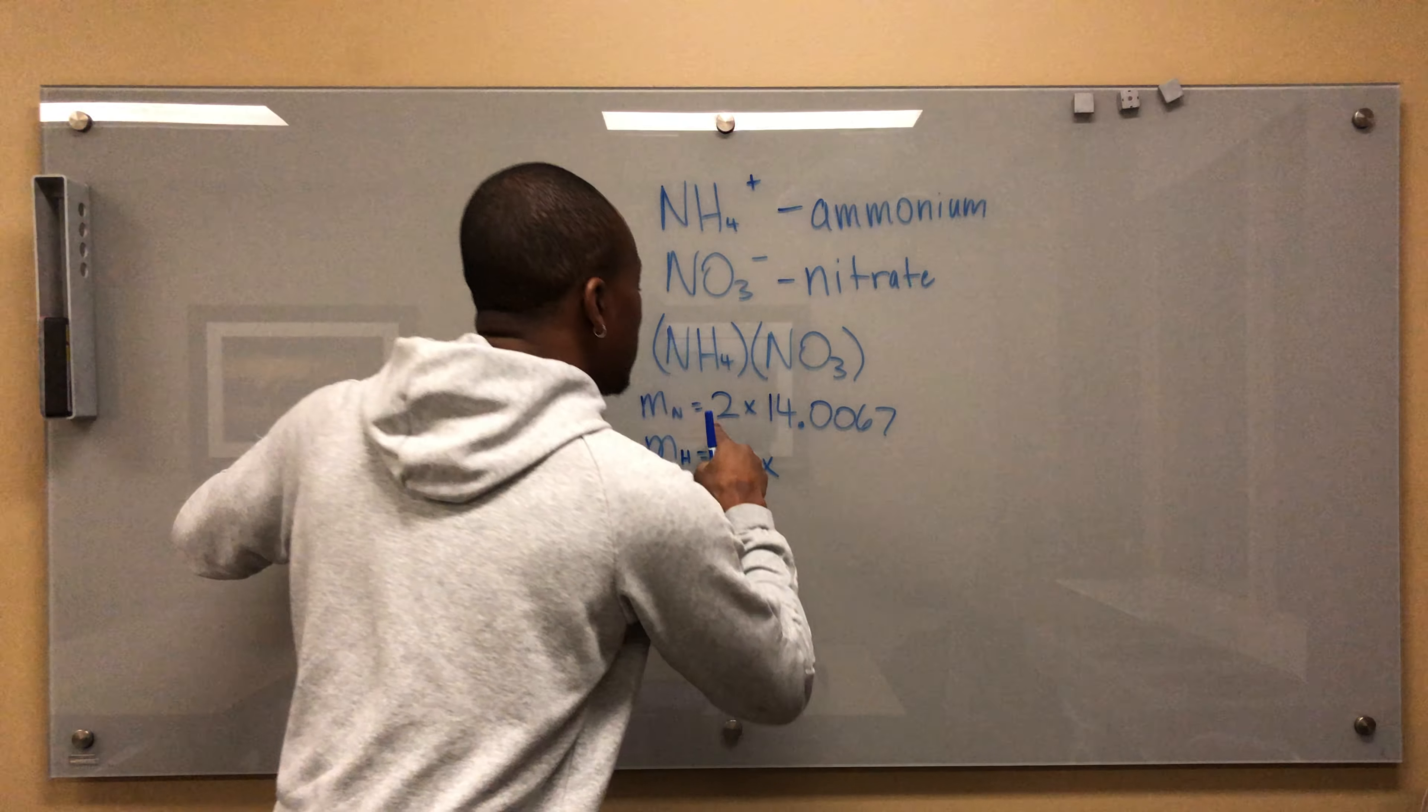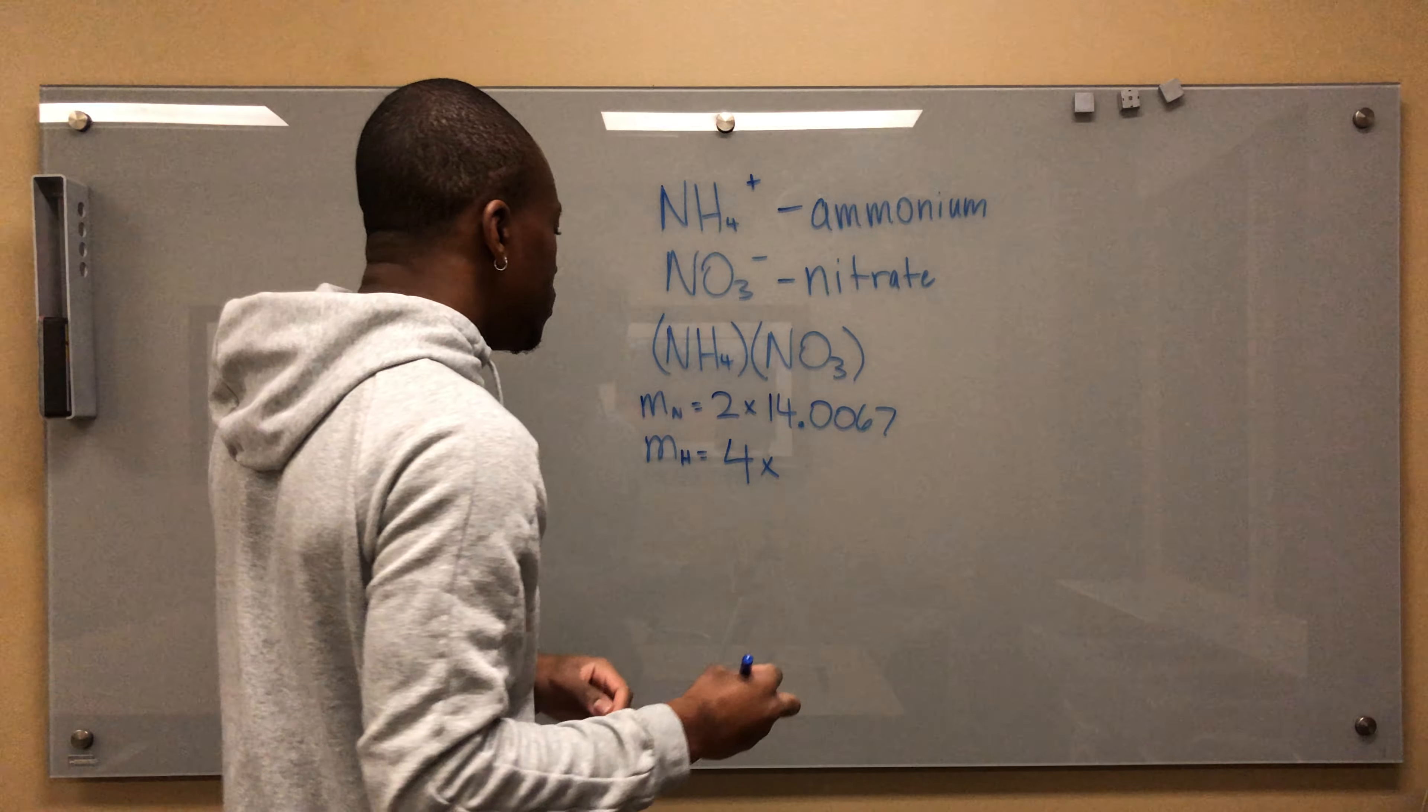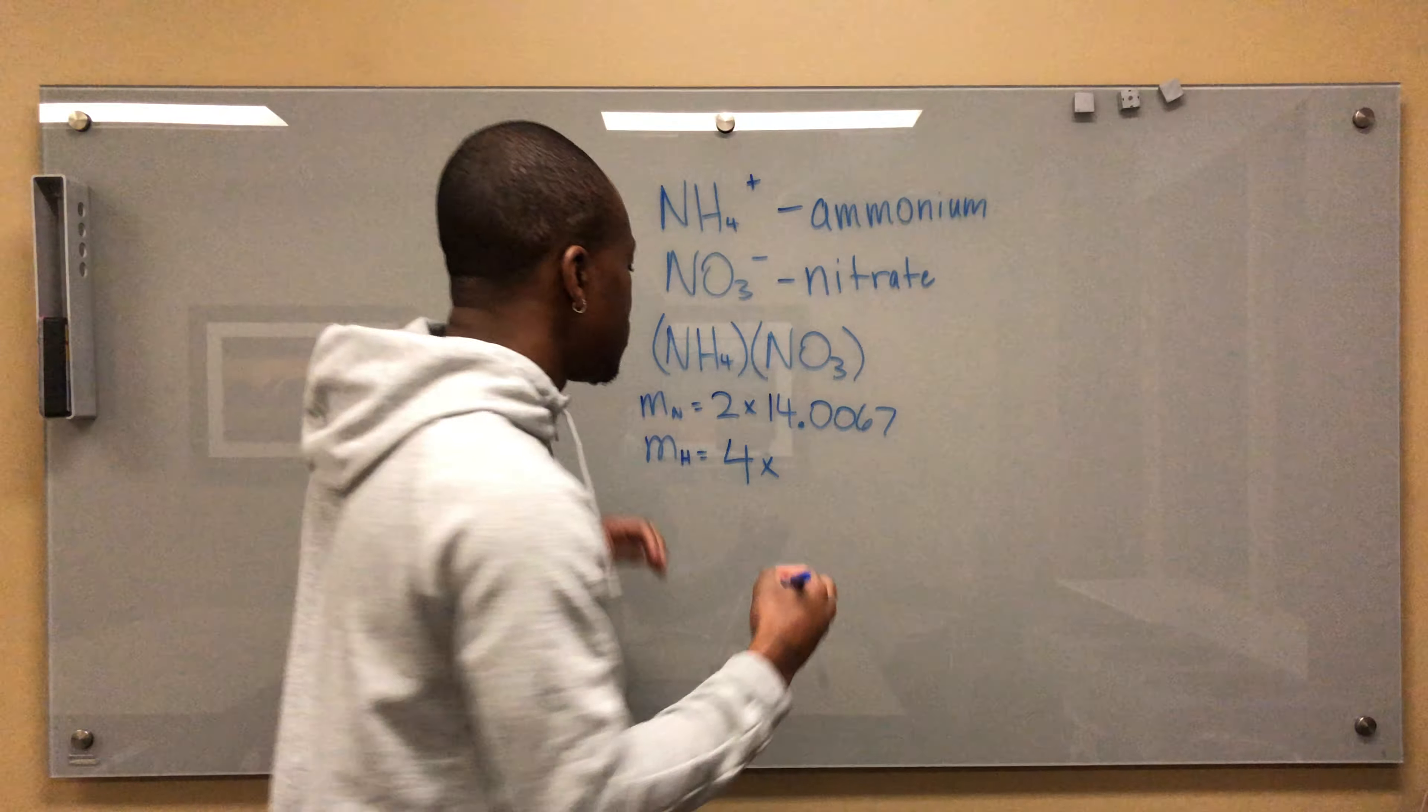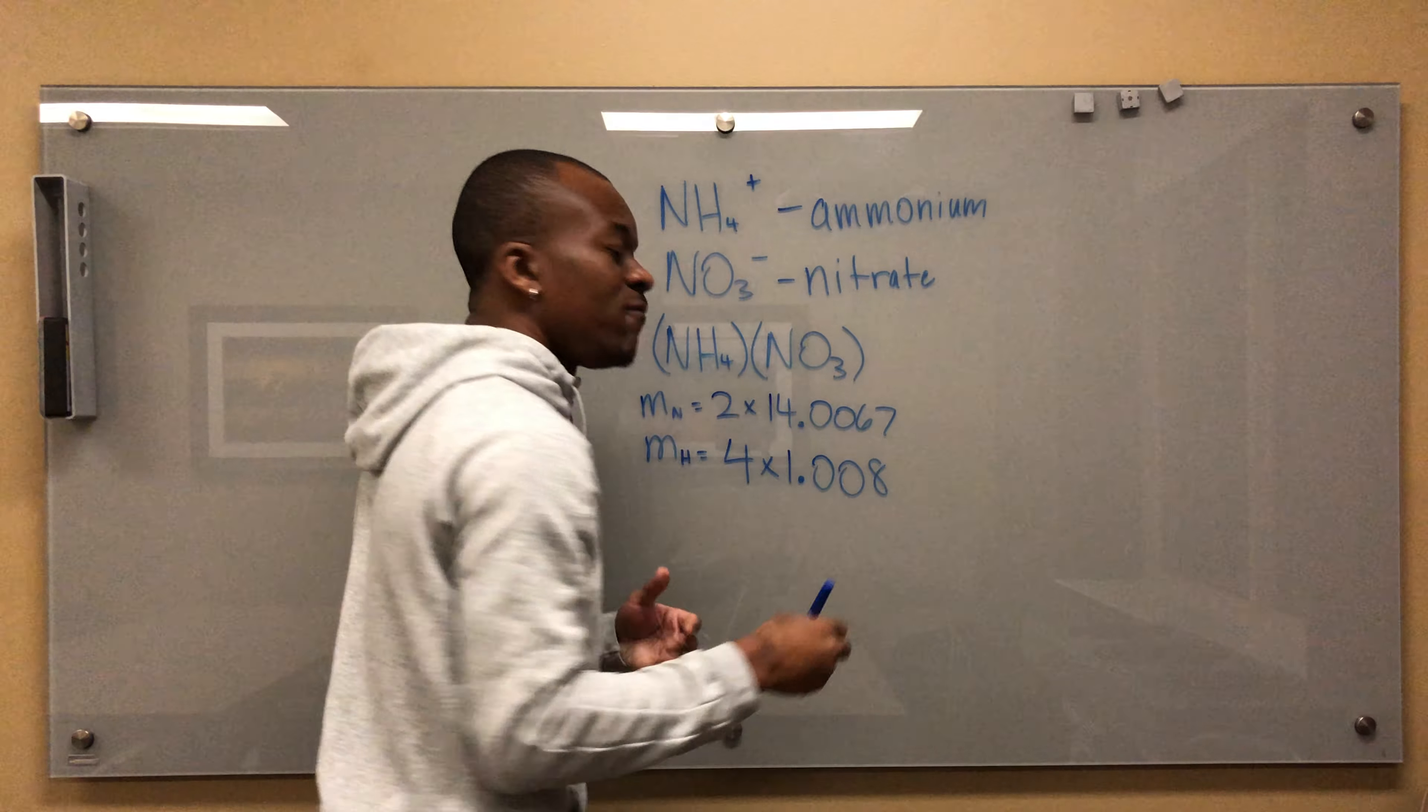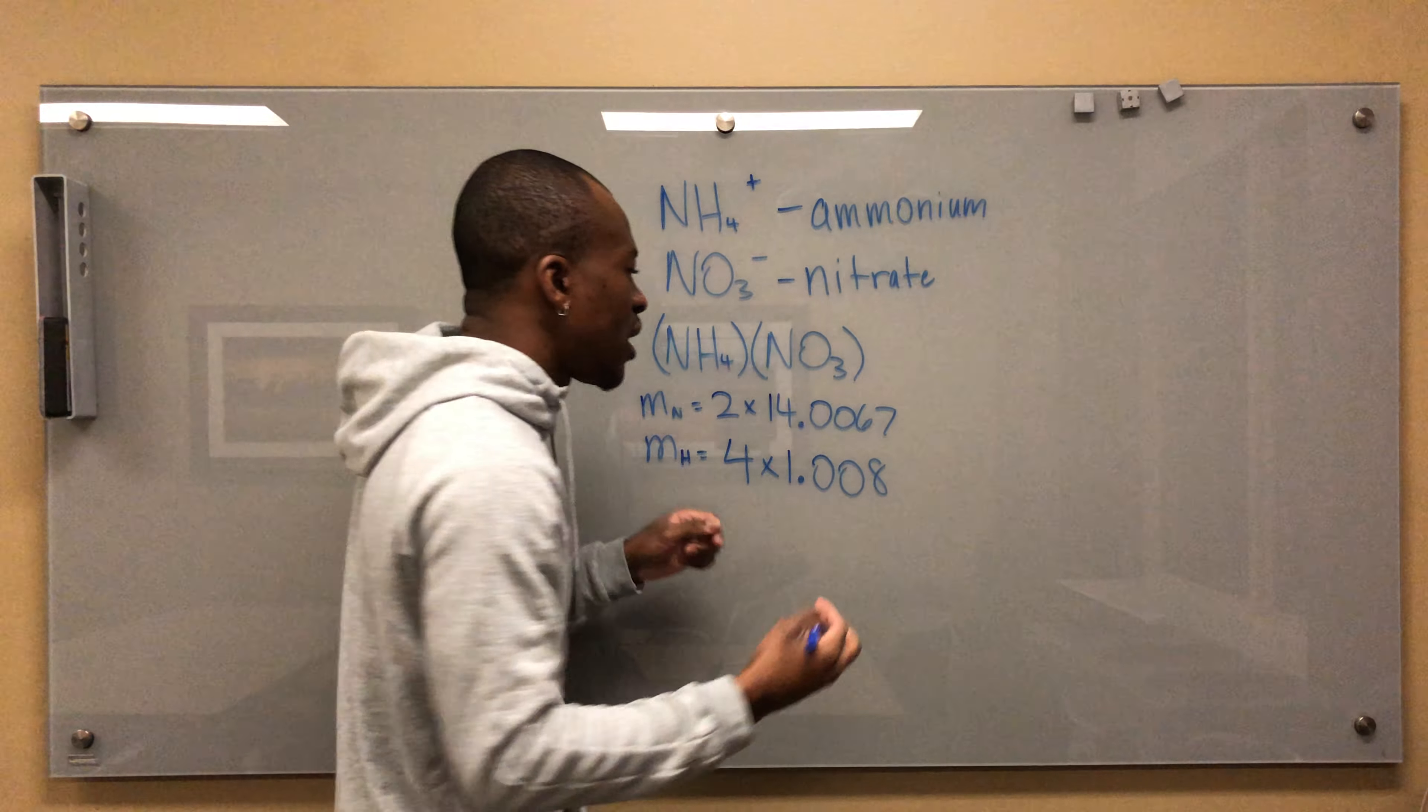The reason I'm doing four here is because there are four hydrogens. Four times hydrogen is 1.008. If you get different values for these numbers, don't worry - the concept is what I'm really focused on here. These could be totally different values; the concept is what you're trying to understand.